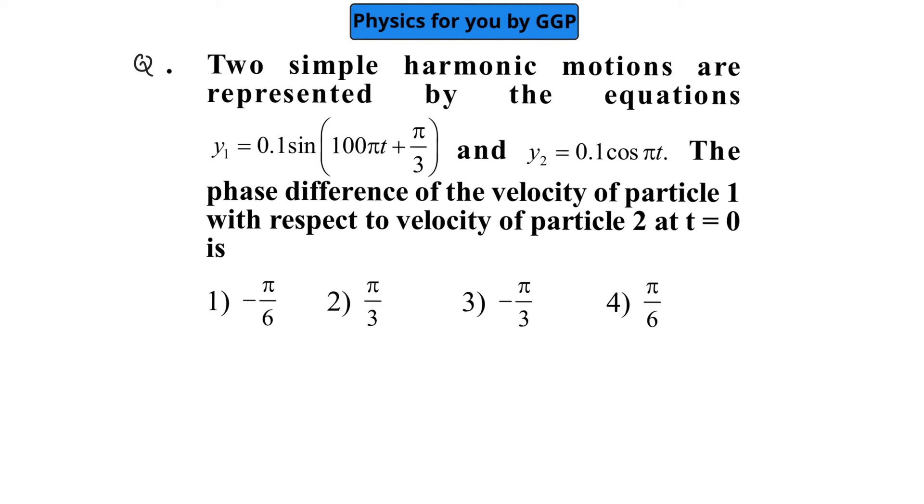This question states that two simple harmonic motions are represented by the equations: y1 equals 0.1 sin(100πt + π/3) and y2 equals 0.1 cos(πt).